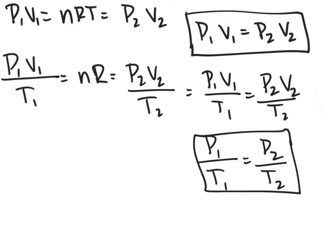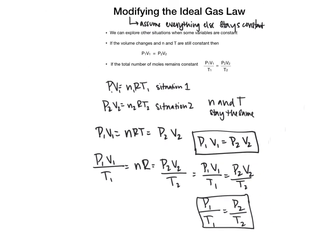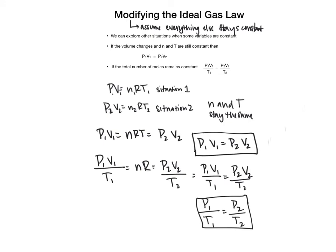These relationships apply as long as we are looking at a single substance where something is changing — for example, a gas container changing volume. We don't tend to see changes in moles unless conditions explicitly state otherwise. You'll also encounter these equations when there isn't enough information to use PV equals NRT directly.